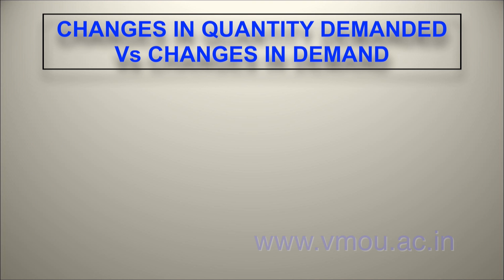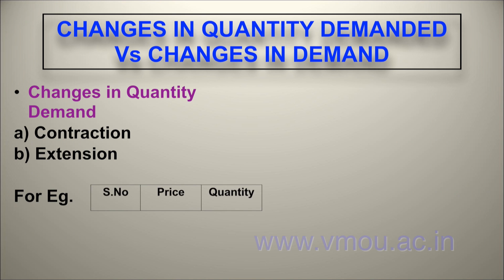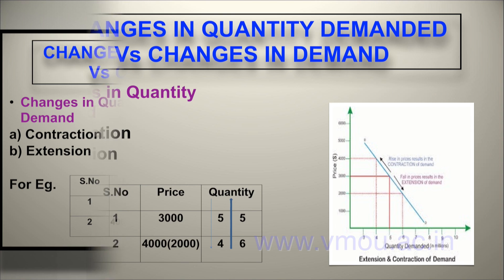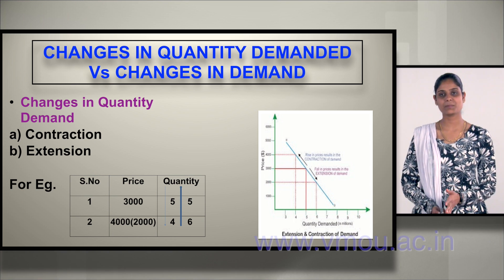Change in quantity demand versus change in demand are two different phenomena. Change in quantity demand means when price fluctuates, quantity also fluctuates. It has two types: contraction and extension. Contraction means when your price was 3,000 you were consuming 5 units, then the price increases to 4,000 and your quantity decreases to 4 units.